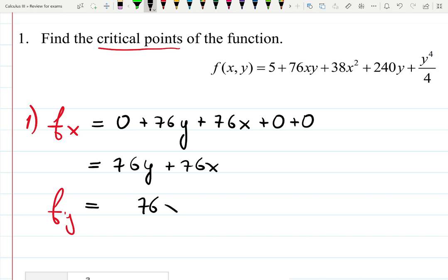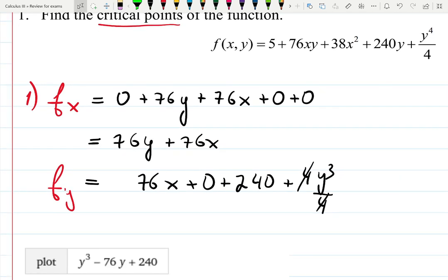And then we'll have 76x this time. Plus 0. Plus 240, because we have 240y. And plus 4y³. Let me simplify this one. It gives you 76x plus 240 plus y³.